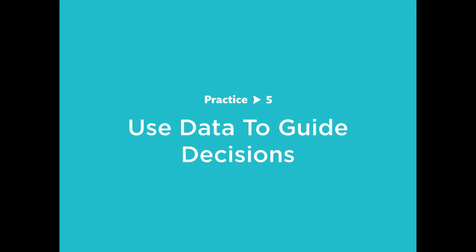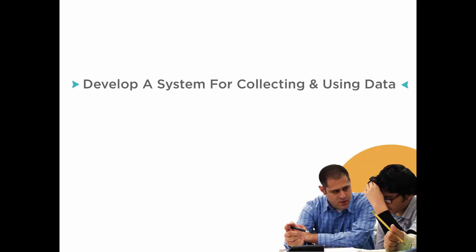Practice five: regularly use academic and behavior data to guide decisions. Data-based decision making is a central tenet within the SWIFT framework. Think about the degree to which data is used efficiently and effectively to guide school-wide decisions. Develop a system for collecting and reporting academic and behavior data so teams can be efficient and effective. Focus on creating efficiencies by ensuring easy access to organized data reports. Ensure leaders facilitate productive meetings in which data are organized and discussion processes are meaningful. Let's discuss: what systems could you put in place to ensure efficiency related to collecting and using academic and behavior data at your school?